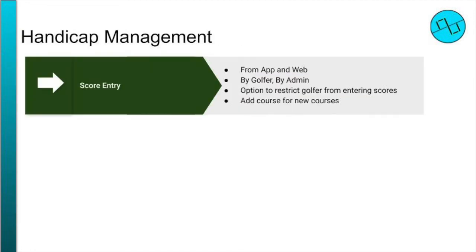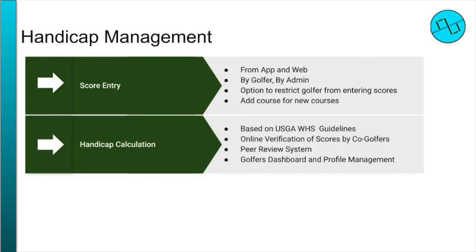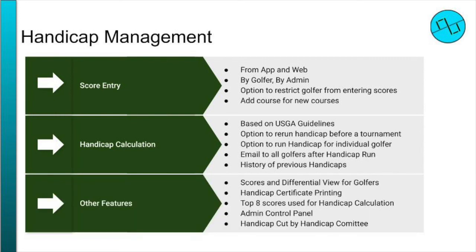Our handicap system follows USGA's WHS guidelines. Scores can be entered by golfers themselves on the mobile app. Score verification can also be done by fellow golfers through the mobile app or via email received with a verification request. The mobile app also features group games and leaderboards which can be set up easily for any group of golfers using the group games option.